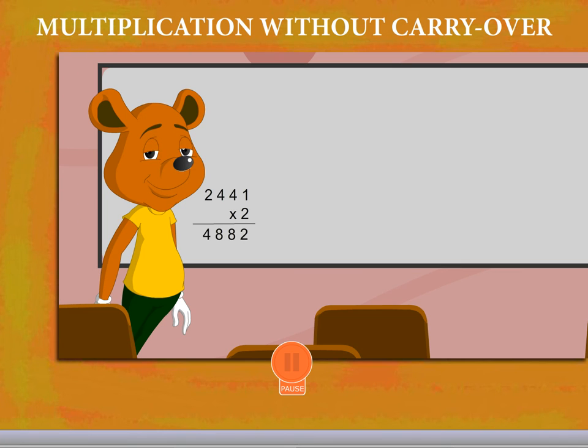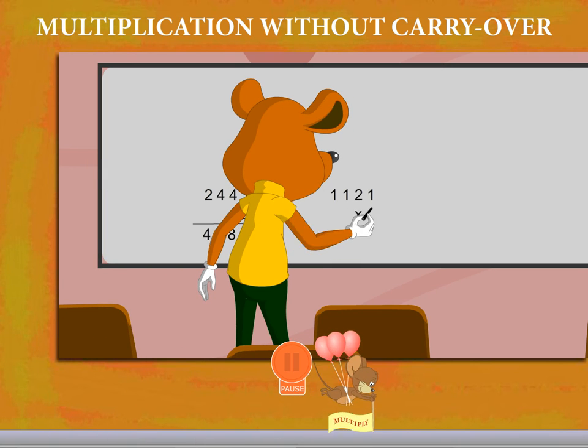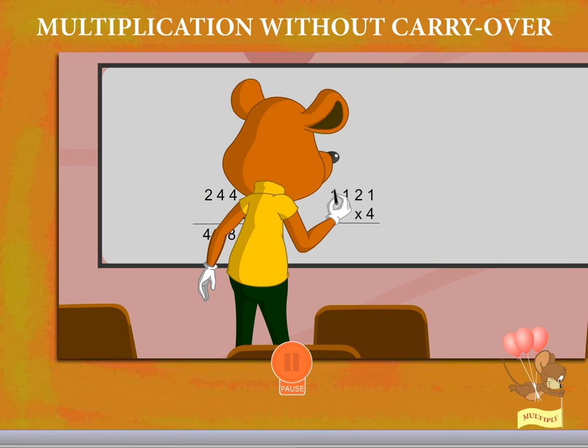Now Toby has another question: 1121 multiplied by 4. He applies the same method.